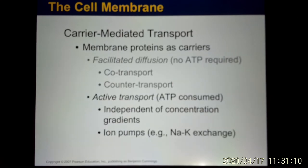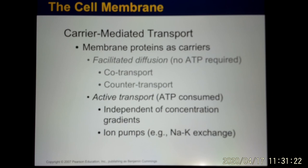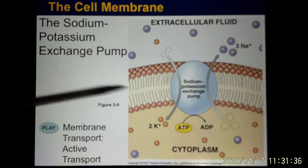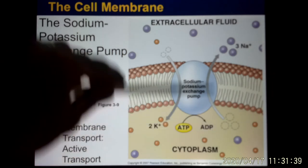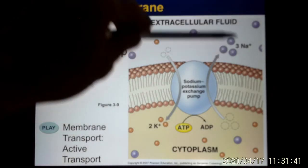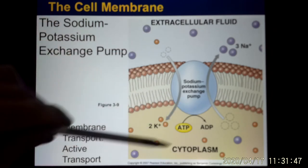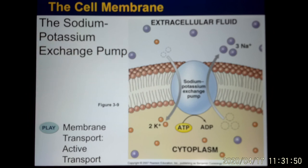Active transport requires ATP — biological energy — to move molecules from low concentration to high concentration. A good example is the sodium-potassium pump, also called the sodium-potassium exchanger. This membrane protein is present in every body cell. It uses ATP to move sodium from low to high concentration, resulting in high sodium outside the cell, and moves potassium from low to high concentration, resulting in high potassium inside the cell.